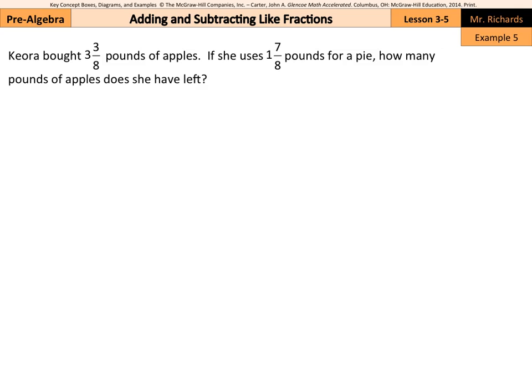In our word problem, Kiora bought 3 and 3 eighths pounds of apples. If she uses 1 and 7 eighths pounds for a pie, how many pounds of apples does she have left? Well, we have our 3 and 3 eighths minus our 1 and 7 eighths. Now, there's two different methods to solve this. One involves mixed numbers, one involves improper fractions, and I'll show you both. You have to be careful with the mixed numbers, though. Because I can't just look and go, okay, I have a 7 and a 3, so it's going to be 4. Be careful.